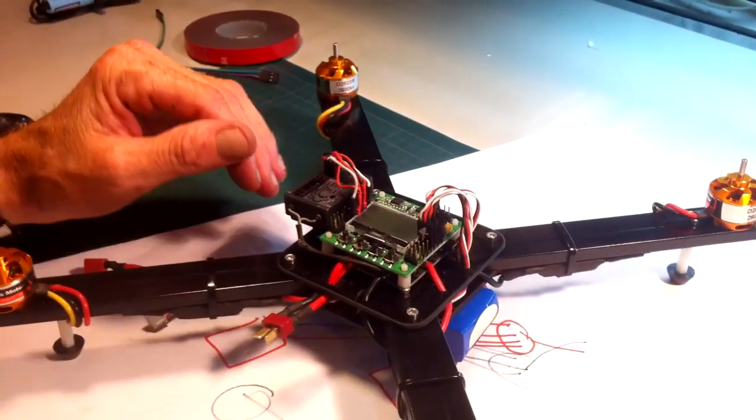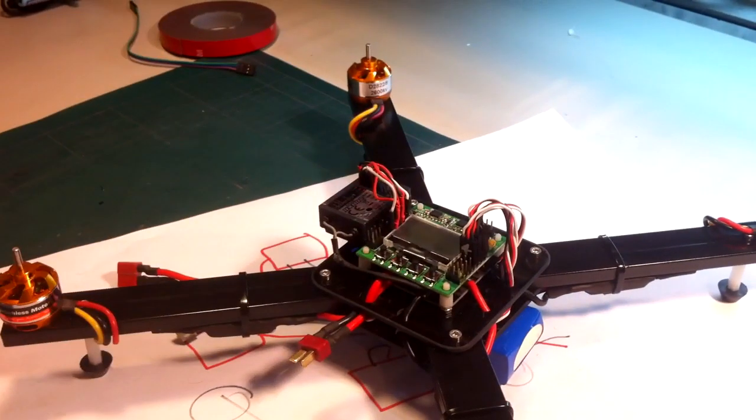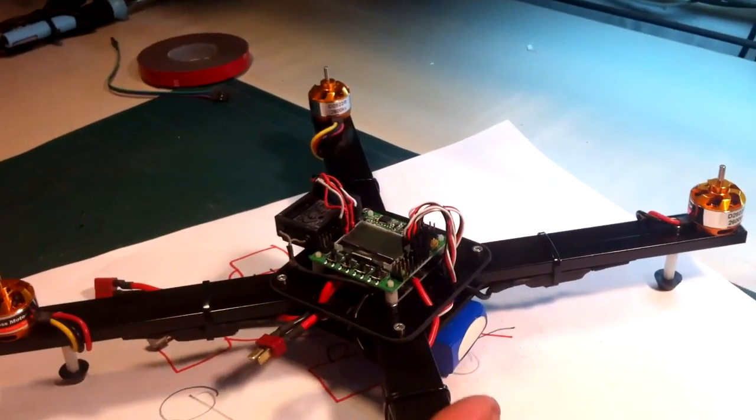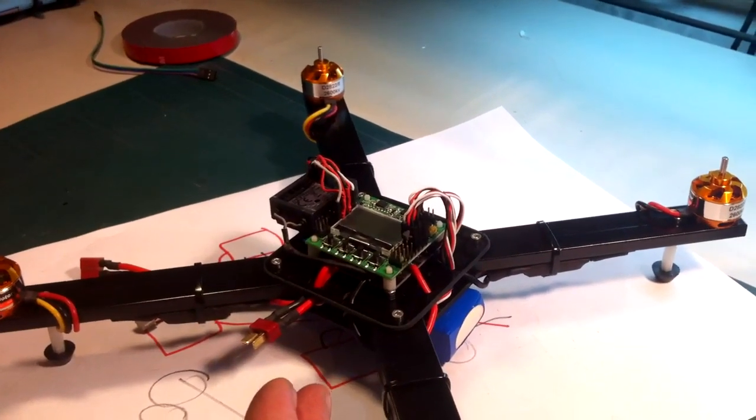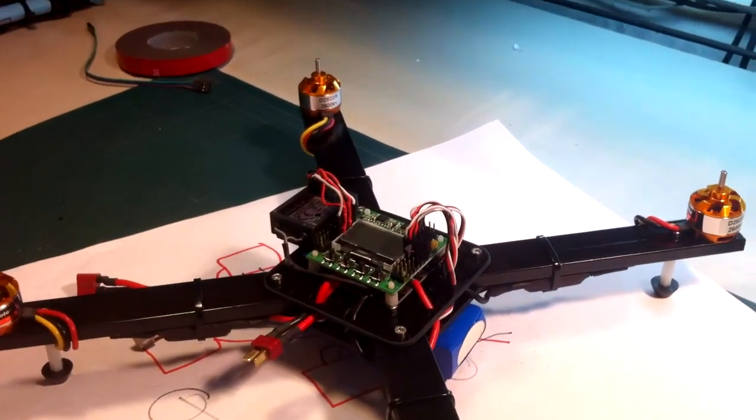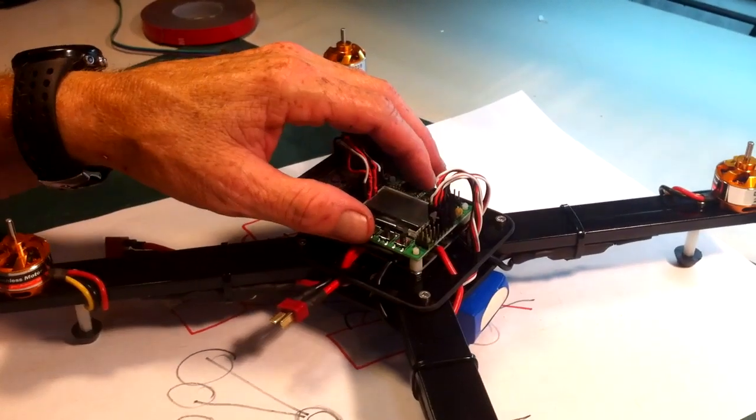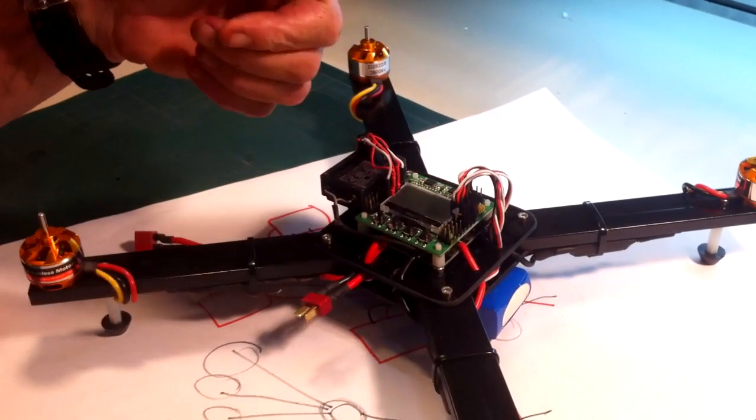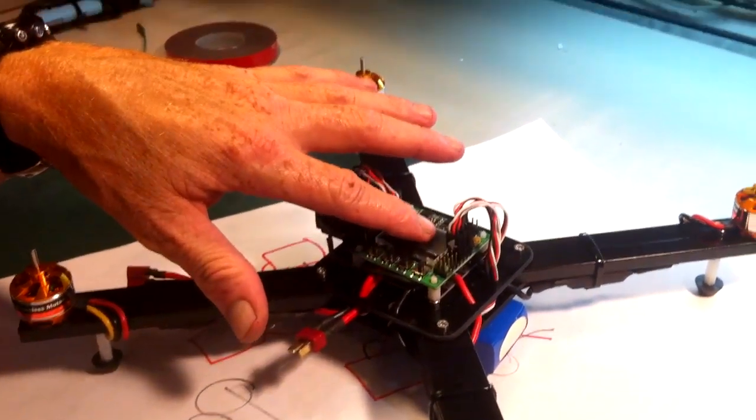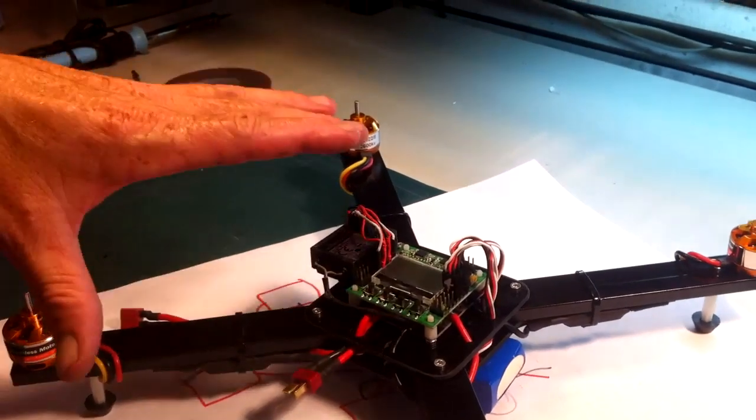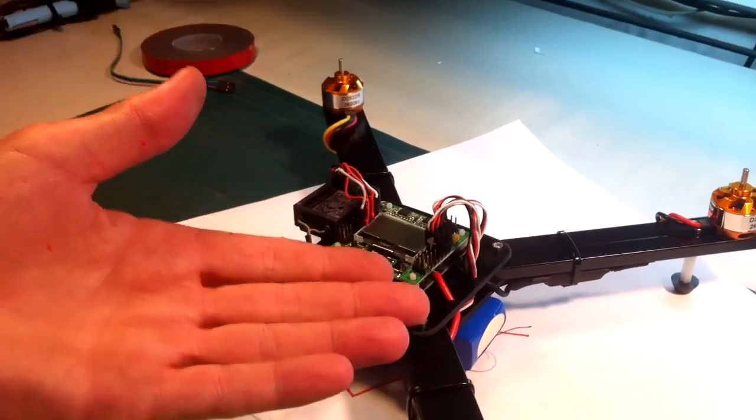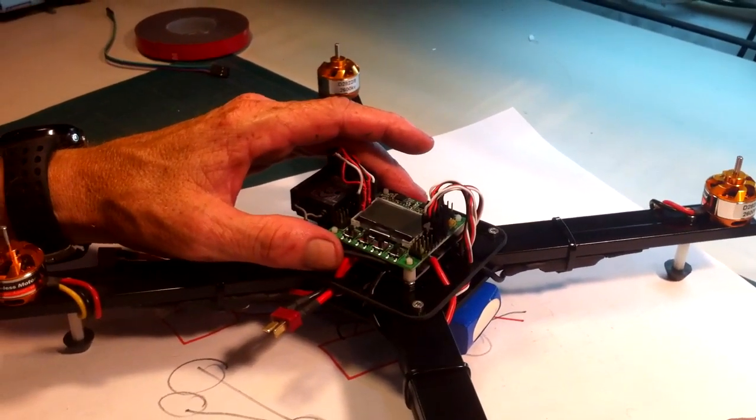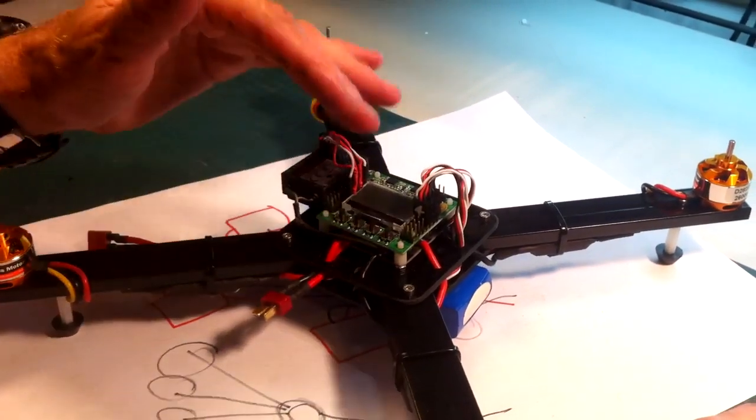And then after that what we're going to do is calibrate the ESCs to make sure that the radio recognizes the endpoints on your throttle range. That's basically to synchronize the throttle high and low points on your radio with the KK2 board with the ESCs all together, so that when you give it throttle input each ESC will power up at the exact same time and this is going to fly properly.